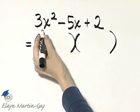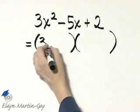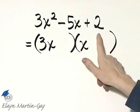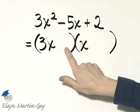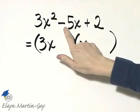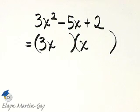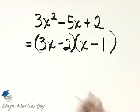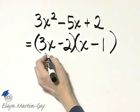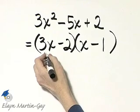What times what gives me 3x squared? I'll try 3x and x. And now let's write down factors of 2. We'll write down negative factors of 2 only because I have a middle term that's negative. So let's try negative 2 and negative 1. If that doesn't work, I'll switch them. And I'm looking for the correct middle term.